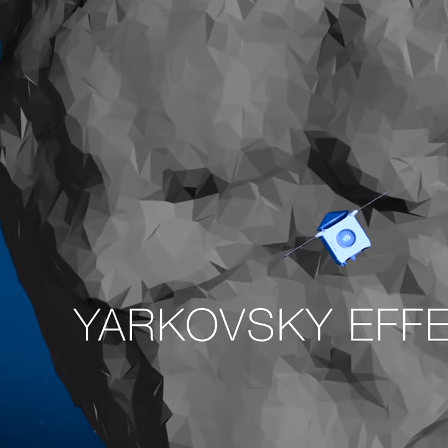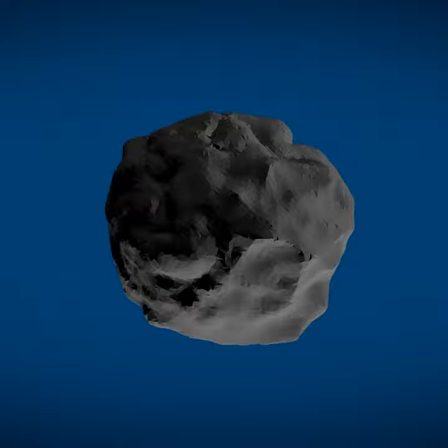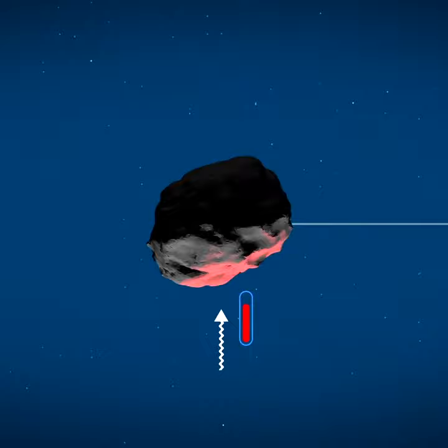So how does this effect work? Well, like Earth, most asteroids rotate slowly as they move through space. During the day, the surface of the asteroid is illuminated by the sun, so it absorbs heat and grows warmer.